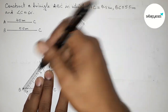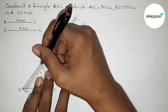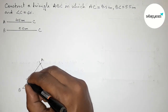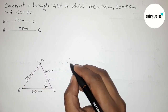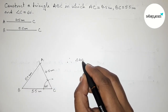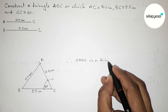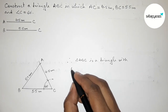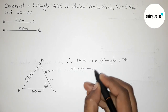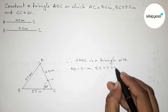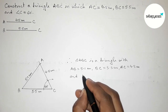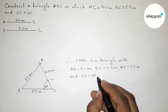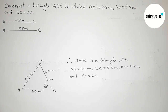AB equals approximately 5.1 centimeters. Therefore triangle ABC has side AB equals 5.1 centimeters, BC equals 5.5 centimeters, AC equals 4.5 centimeters, and angle C equals 60 degrees. That's all — thanks for watching. If this video is helpful, please share it with your friends.